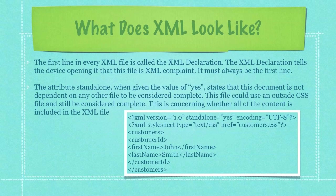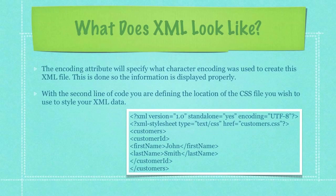So what exactly does XML look like? Well, I have an example down here surrounded by white. The first line in every XML file is called the XML declaration. The XML declaration tells the device opening it that this file is XML compliant. It must always be the first line. The attribute standalone in that line, when given the value of yes, states that this document is not dependent on any other file to be considered complete. This file could use an outside CSS file and still be considered complete, however.